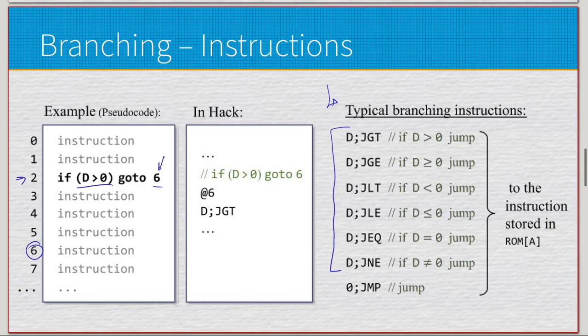Let's think about the last one first. It's just jump - this is the unconditional branch we were looking at earlier. All the previous ones have D on the left side of the semicolon and then some form of J with two letters. The J stands for jump, and then the last two letters: greater than, greater than or equal to, less than, less than or equal to, equal to, not equal to.